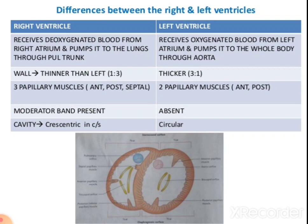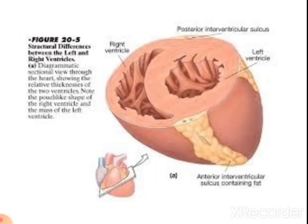Key differences between right and left ventricle: the right ventricle receives deoxygenated blood from the right atrium; the left receives oxygenated blood from the left atrium. The wall of the right ventricle is thin compared to the left. The right ventricle has three papillary muscles; the left has only two. The right ventricle has a moderator band absent in the left. The cavity of the right ventricle is crescentic in shape; the left ventricle is circular in cross-section.